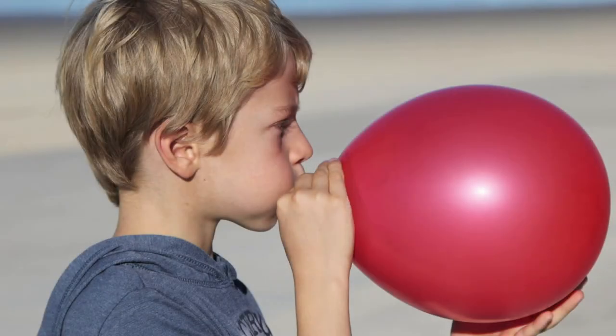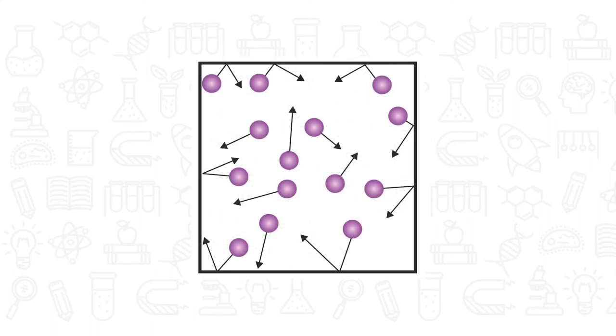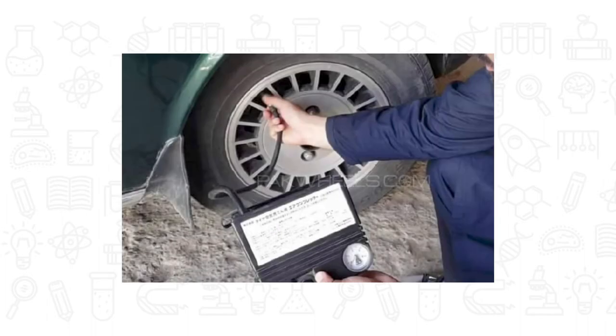Gases are squishy and can easily be compressed. We use gas pressure every time you blow up a balloon. Gas pressure is caused when gas particles hit the walls of their container. The more often the particles hit the walls, and the faster they are moving when they do this, the higher the pressure.